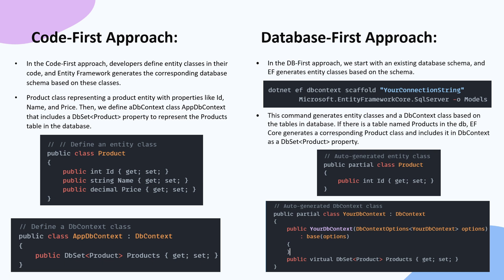EF Core has two approaches: Code First and Database First. In the Code First approach, developers define entity classes in their code and Entity Framework generates the corresponding database schema based on these classes. You don't have to create tables in the database manually — you just write the code and run migrations. For example, a Product class with properties like ID, Name, and Price, along with a DbContext class AppDbContext that includes a DbSet of type Product to represent the Products table.